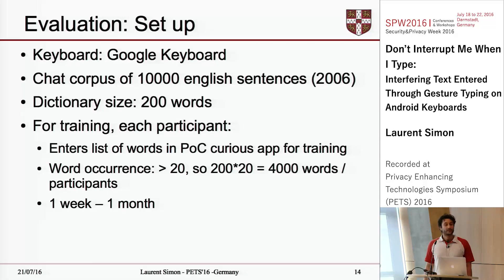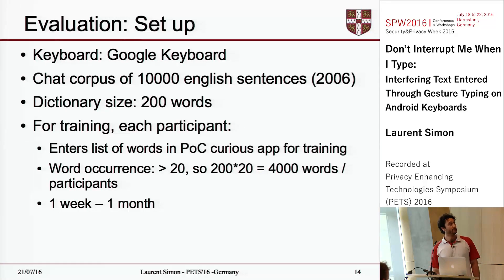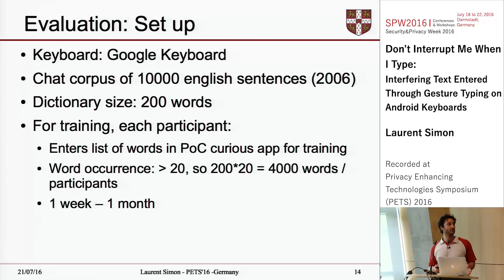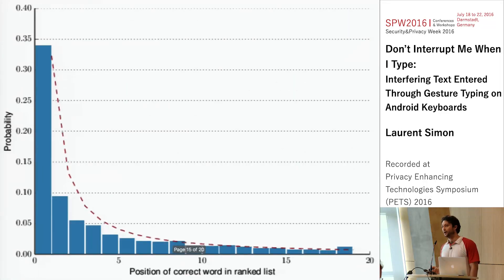For evaluation we looked at the Google keyboard. We used a real chat corpus of 10,000 English sentences collected by another group of researchers in 2006, and within this corpus we limited ourselves to the most common 200 words. For training, each participant entered a series of words in an app we developed, with each word occurring roughly 20 times — roughly 4,000 words total per participant. It took each participant between a week and a month to complete the task, which is why we limited ourselves to 200 words.